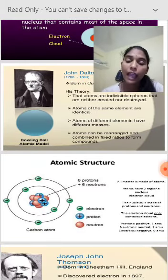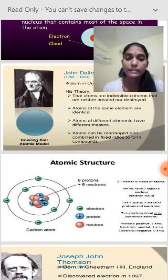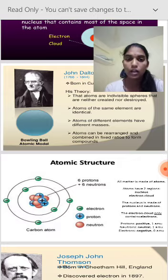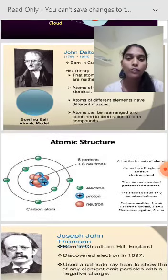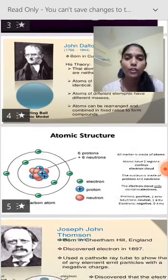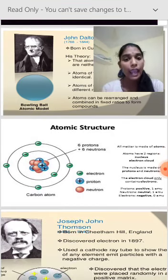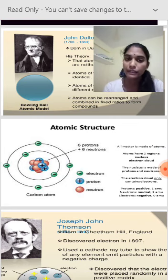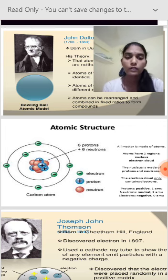Second point: atoms of the same element are identical, meaning atoms of the same element have the same masses and same properties. Third point: atoms of different elements have different masses. Fourth point: atoms can be rearranged and combined in a fixed ratio to form a compound — one element combines with another element to form a compound.